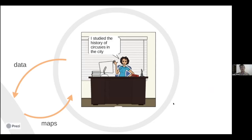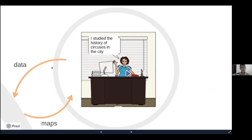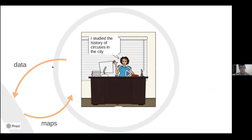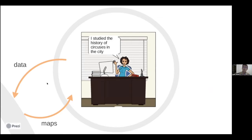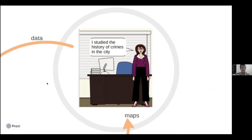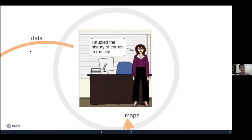Let's imagine a hypothetical situation to understand the main aims of the platform. We have a researcher who says, I studied the history of circuses in the city. She can upload her data to the platform — data that can be spatialized — and have maps and visualizations for her own material, a thesis or article. A second researcher says, I studied the history of crimes in the city. In the same way, she can upload her data and have her own maps for her own use.